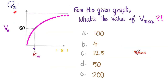First question, number 21 — because the previous 20 were in previous videos in this biochemistry playlist. From this given graph, what is the value of Vmax, or the maximum velocity? Is it 100, 4, 12.5, 50, or 200? Please pause.